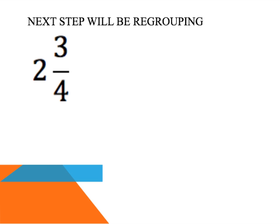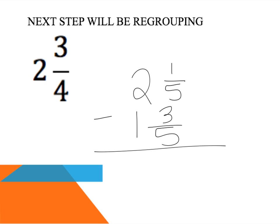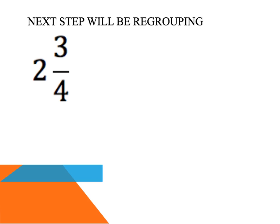We've learned how to rename a fraction greater than one as a mixed number. Now we need to learn how to regroup a fraction — there are two ways, and I'll show you both. First, it's important to know why: say you're subtracting two and one fifth minus one and three fifths. The denominators are the same, so that part is easy. But looking at the fractions, I can't subtract one minus three, so I need to regroup.